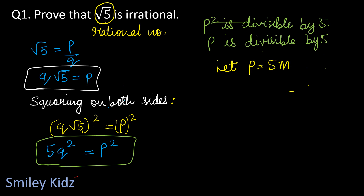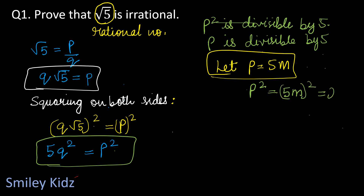We take p equal to 5m because we are proving root 5 is irrational. If it were root 3, we'd use p equals 3m; if root 2, p equals 2m. Now p equals 5m, so p² equals (5m)² which equals 25m².